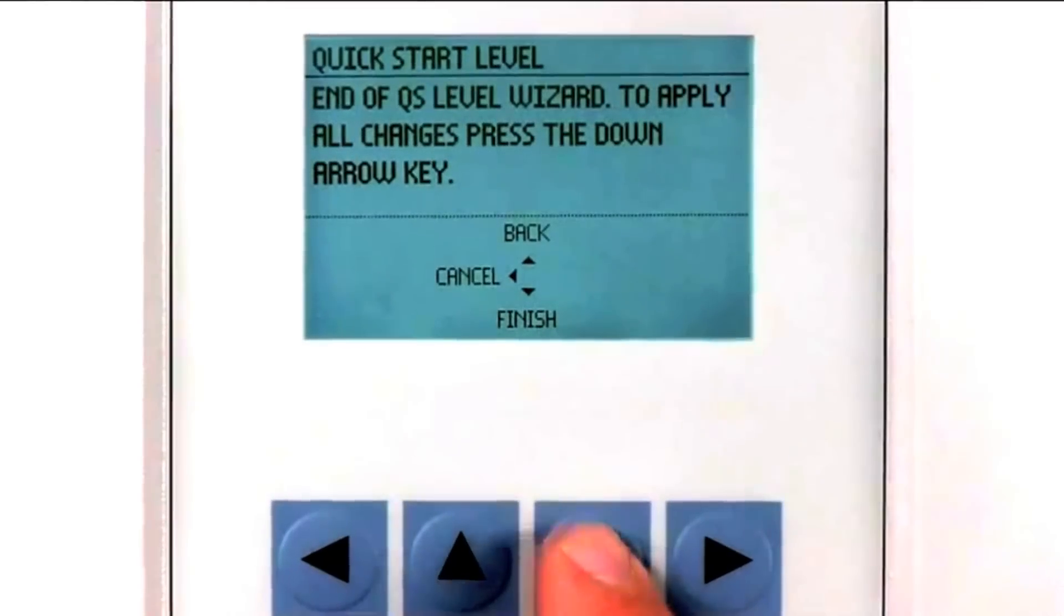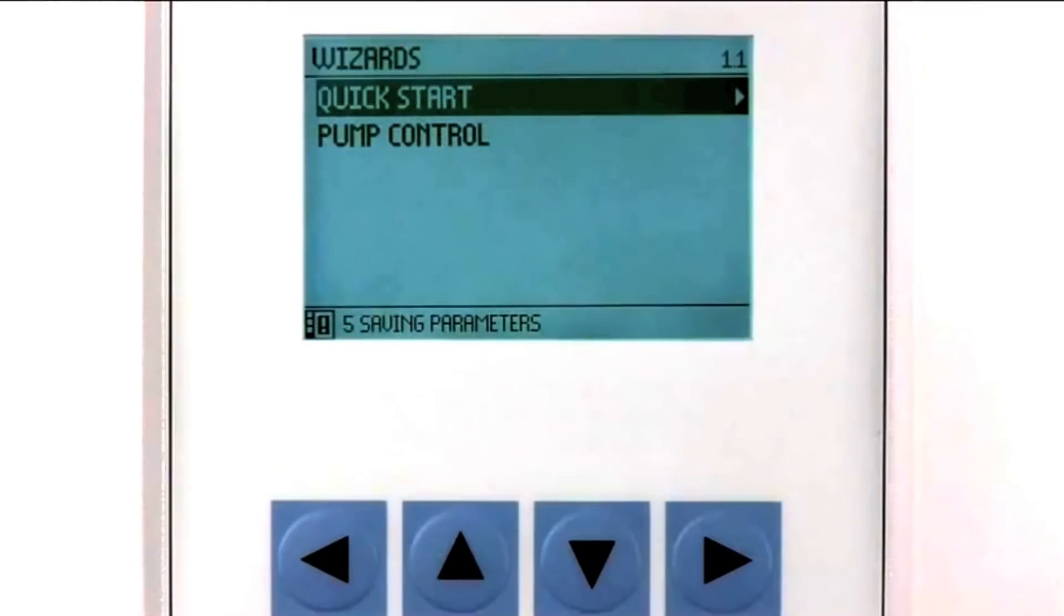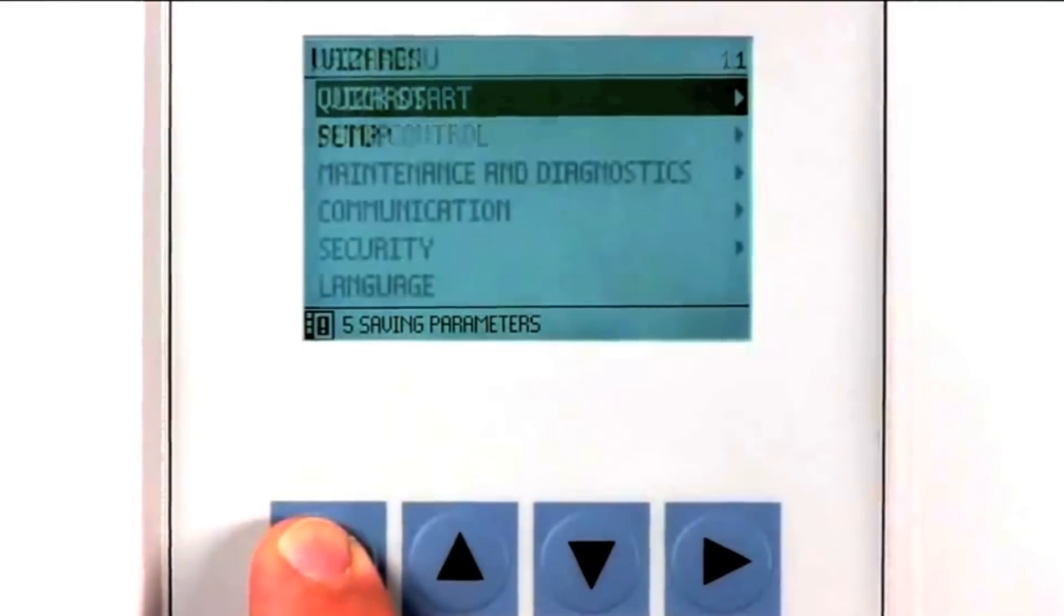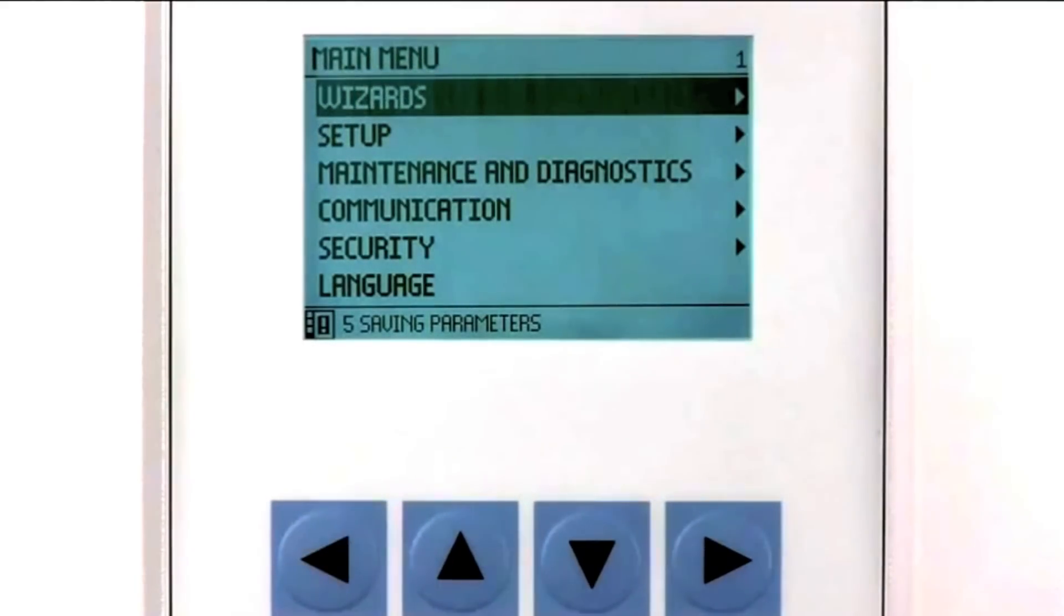Then press the down arrow key again to save all of the settings we just made. The level quick start wizard is just one of the helpful wizards we have built into the Citrans LUT400.